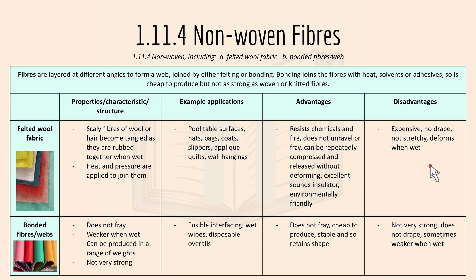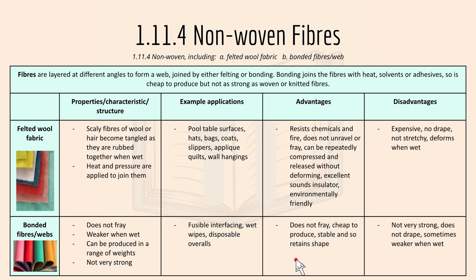Bonded fibers or bonded webs: properties include that it does not fray, is weaker when wet, and can be produced in a range of weights. Examples include fusible interfacing, wet wipes, and disposable overalls. Advantages: does not fray and is cheap to produce. Disadvantages: not very strong and can be weaker when wet.